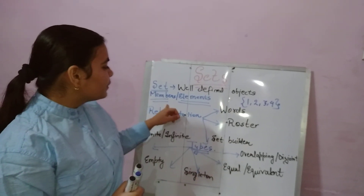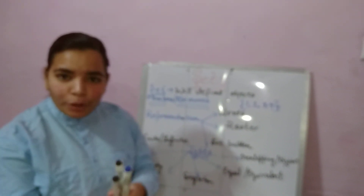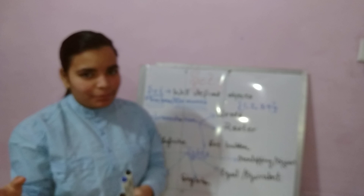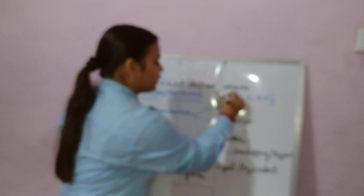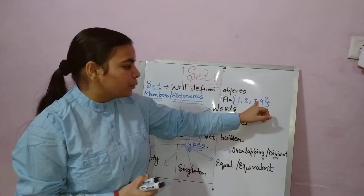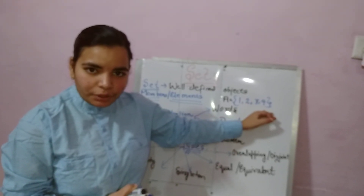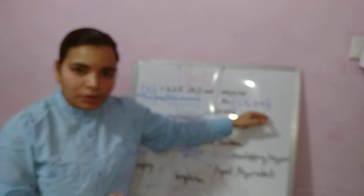The second thing is, what do we mean by the members or elements of a set? The numbers or the objects which comprise a set — which are a part of a set — these are known as the members or elements. Like I have given an example over here. Suppose we consider A to be a set comprising of 1, 2, 3, and 4. Then these are known as the elements or the members of this set.